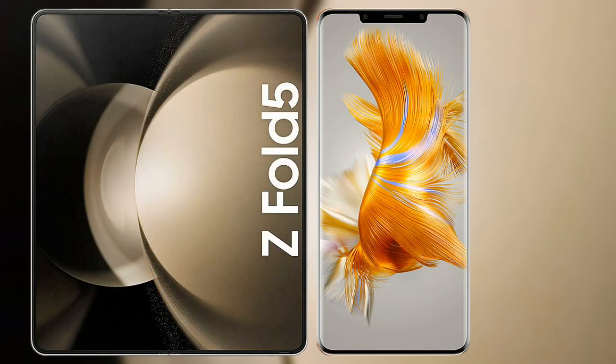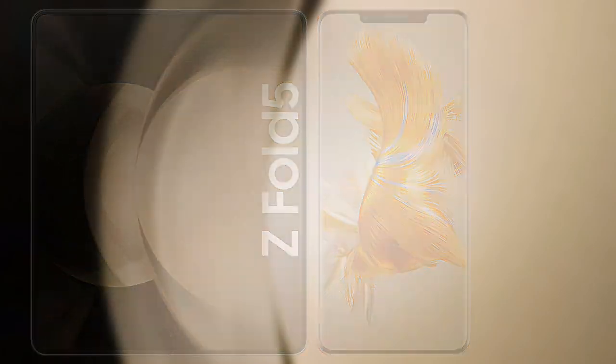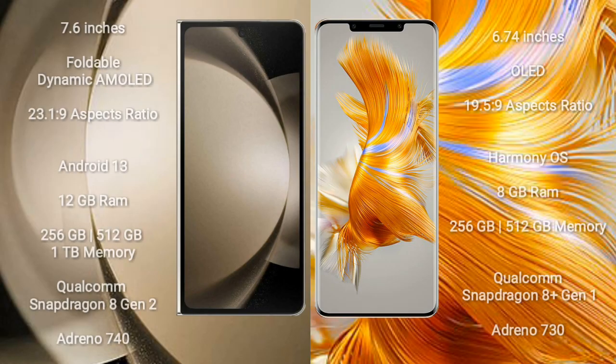I will compare the new Samsung Galaxy Z Fold 5 with Huawei Mate 50 Pro. Samsung Galaxy Z Fold 5 comes with a 7.6-inch foldable dynamic AMOLED display and an aspect ratio of 23:1:9. Huawei Mate 50 Pro has a 6.74-inch OLED display and an aspect ratio of 19:5:9.